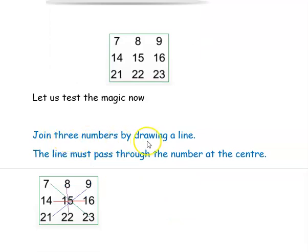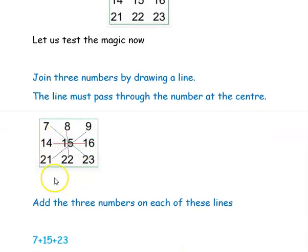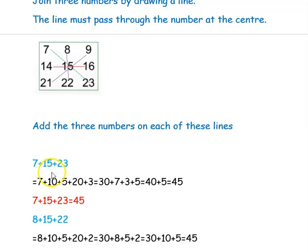We want to join three numbers by drawing a line, and the condition is the line must pass through the number at the center. So I have joined 7, 15, 23 — this passes through the center. Then 14, 15, 16 — this also passes through the center. Then 8, 15, 22 and 21, 15, 9. I have drawn four lines joining three numbers each, all passing through the center 15. First, adding 7 plus 15 plus 23, I got 45.